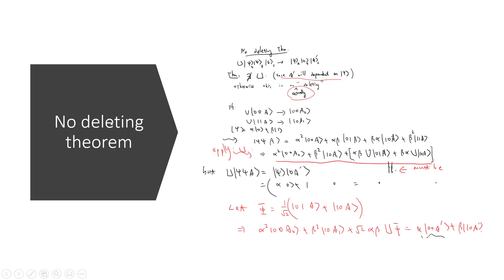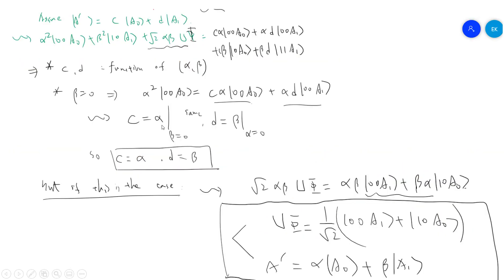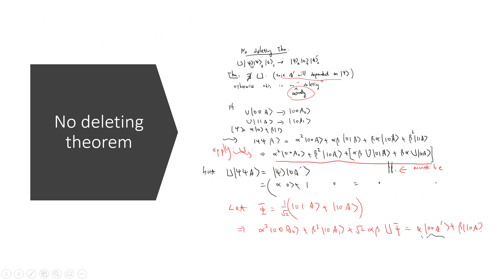In this video, we prove the no-deleting theorem, which is a no-go theorem in quantum information. There are many no-go theorems in physics. The no-deleting theorem states: there is no unitary U such that for three copies of Hilbert space, U|ψ⟩|ψ⟩|a⟩ = |ψ⟩|0⟩|a'⟩. The idea is that you have two copies of |ψ⟩ and you try to delete one, preserving one copy while the second system becomes |a'⟩.